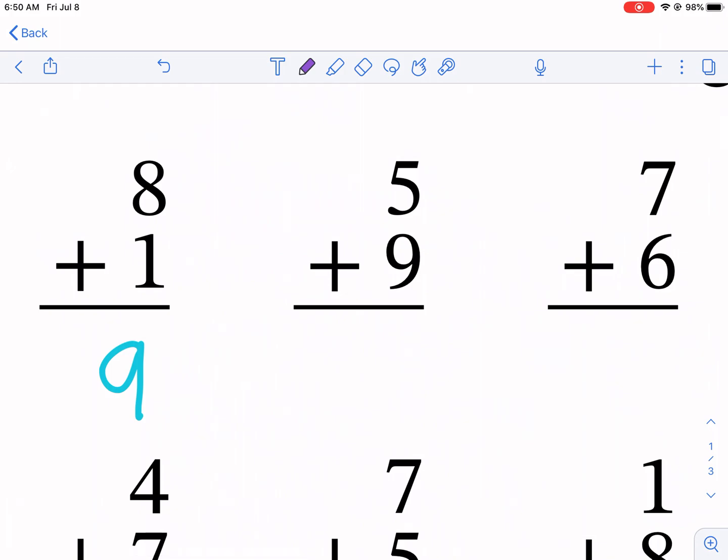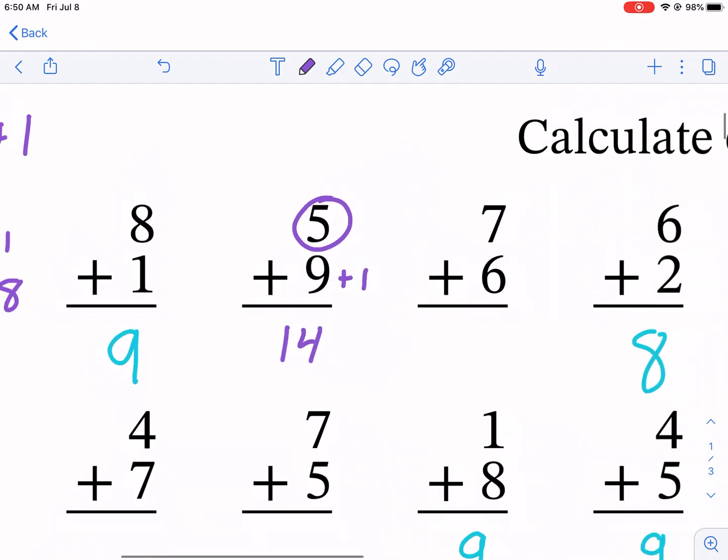Same thing over here. Maybe that was a little confusing. Let me do it again. I know nine plus one equals 10. Well, that's five, not one. So I have four left over. So that's going to take me to 14.